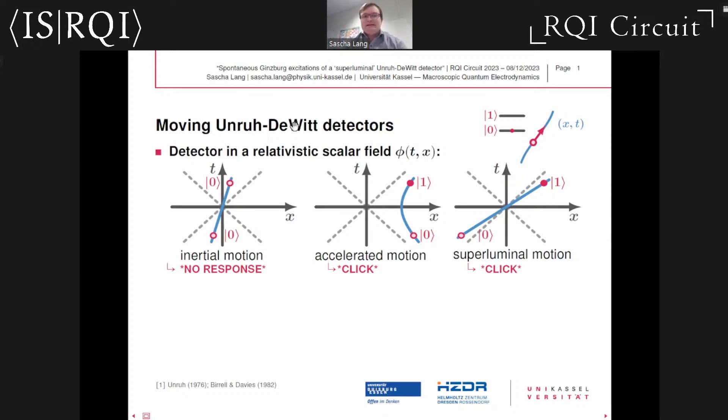I want to start with a brief recap on some known results regarding the excitation probabilities of moving Unruh-DeWitt detectors which are initially in the quantum mechanical ground state. When talking about Unruh-DeWitt detectors today, I always have a point-like two-level system in mind which moves along some prescribed classical trajectory. Later on, we will consider a scenario where such an Unruh-DeWitt detector is realized by means of a hydrogen atom.